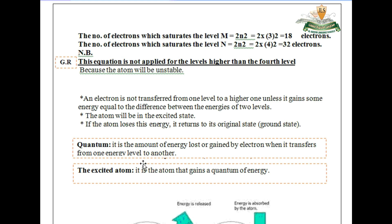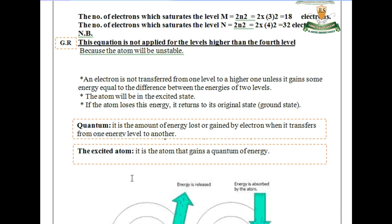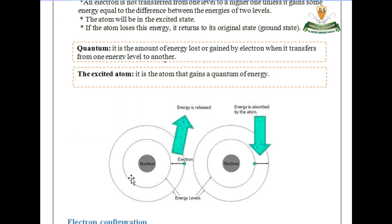Now, what is the quantum? The quantum is the amount of energy lost or gained by an electron when it transfers from one energy level to another. The excited atom is the atom that gains a quantum of energy.